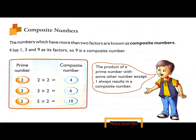9 has more than two factors such as 1, 3 and 9. So 9 is a composite number. Prime number means it has only two factors such as 1 and itself. But composite number have more than two factors.